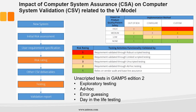What was the main impact of Computer System Assurance (CSA) on computer system validation related to the V-model? We will focus on two major aspects: risk rating and testing approach.